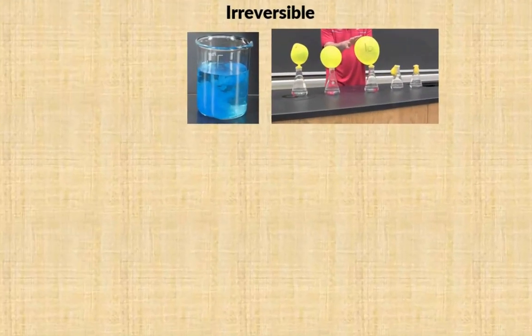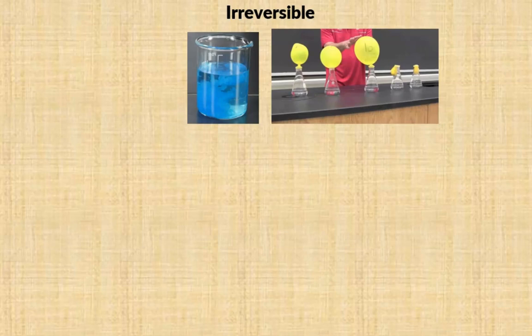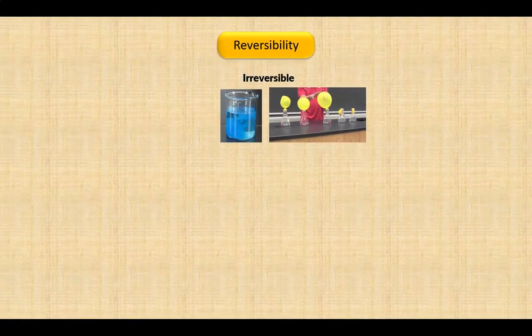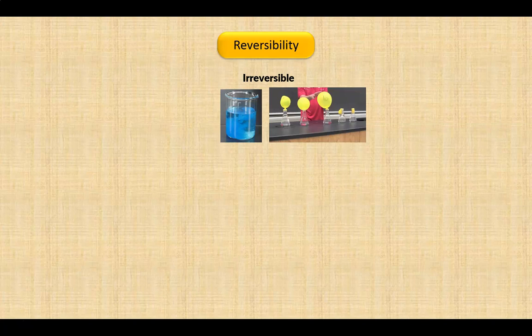This picture shows how a reaction in a flask has produced a gas that has partially blown up balloons. The gas cannot be recombined with the material in the flask to produce the original substances, at least not under these room conditions. This makes the original reaction irreversible.